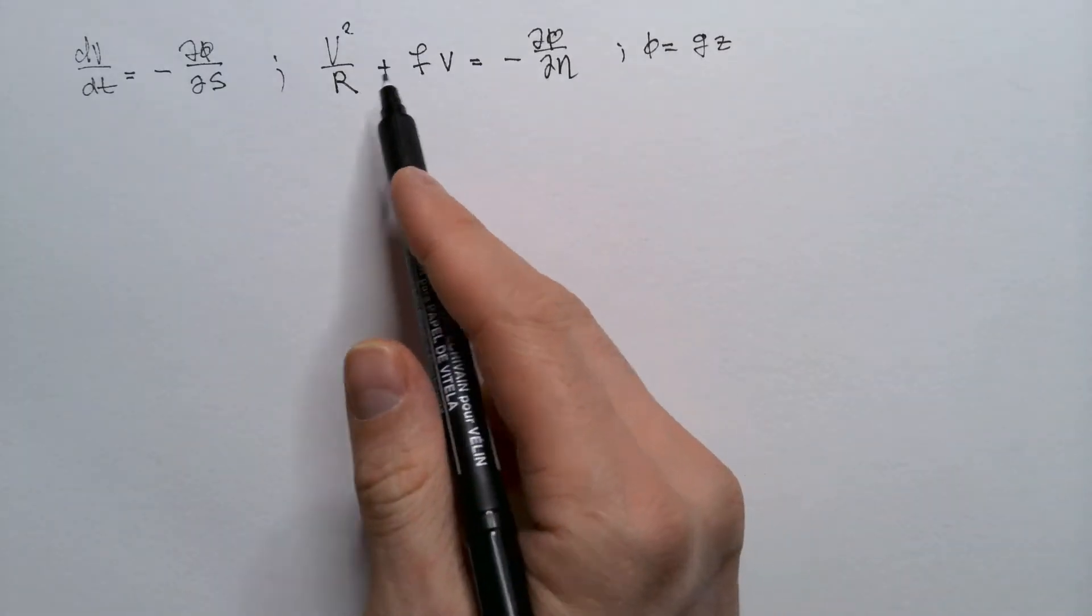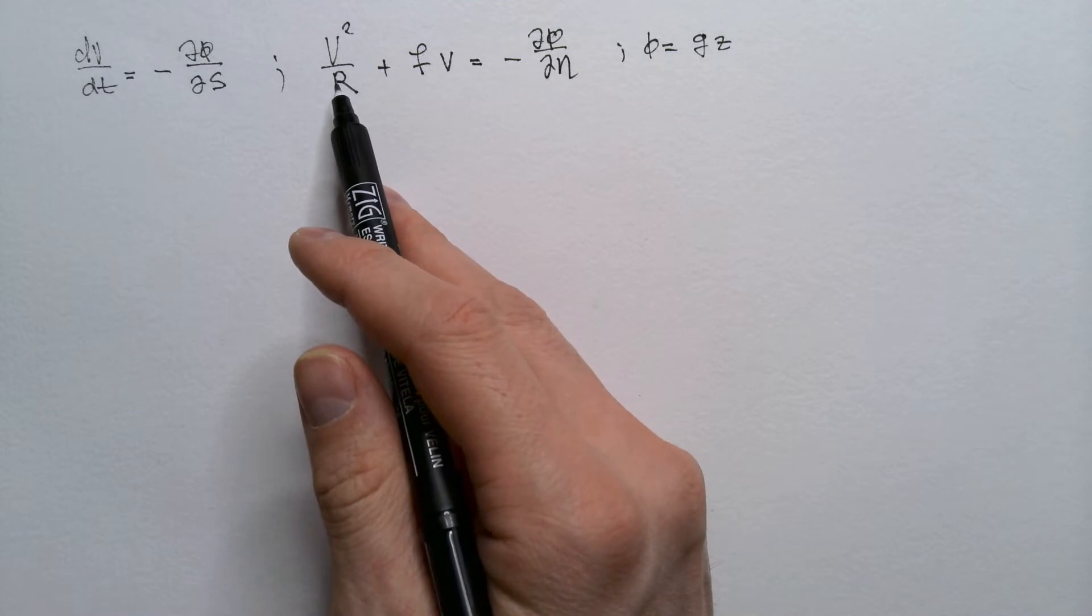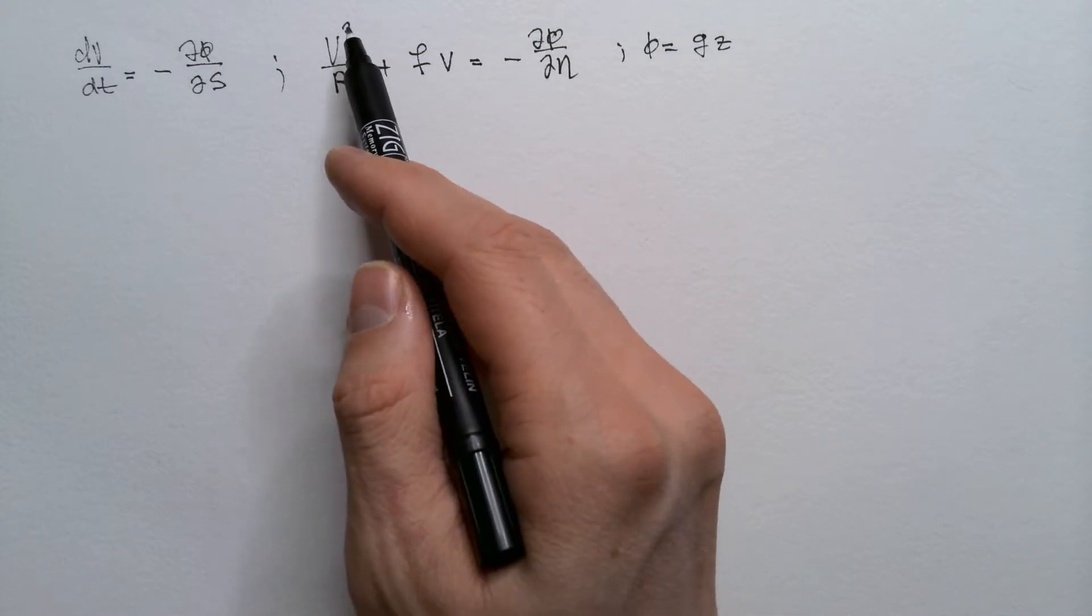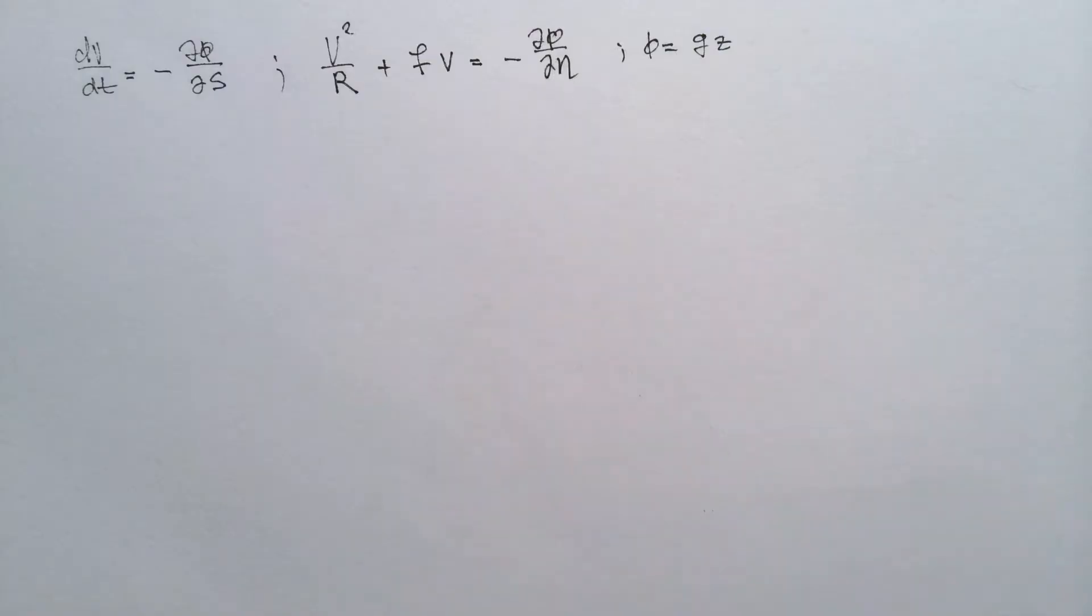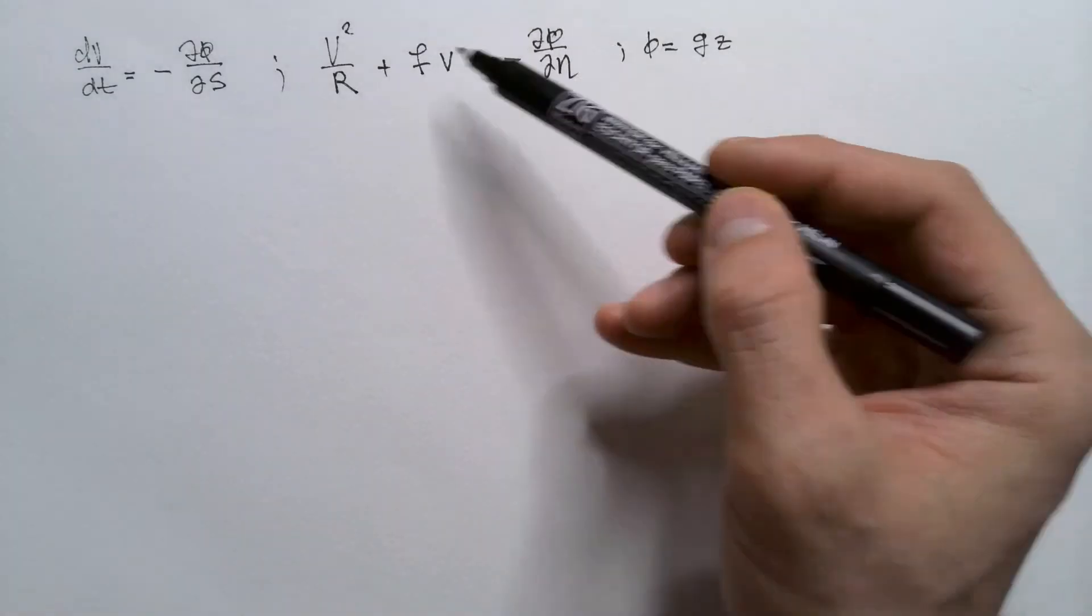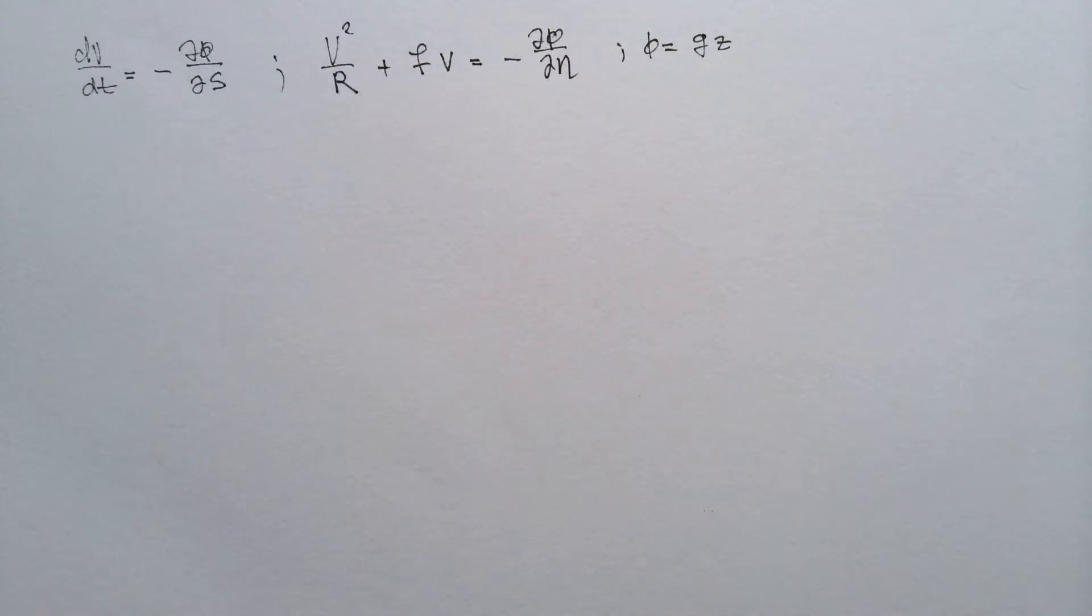F is Coriolis parameter. R is radius of curvature of the motion of air parcel. Therefore, v squared over R is centrifugal force. Delta phi over delta N and delta phi over delta S, with negative signs, are the pressure gradient force. This is acceleration, and G is acceleration due to gravity.